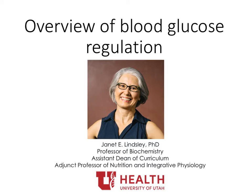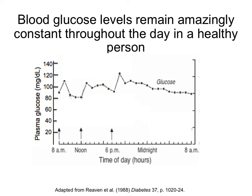Hello, welcome to this mini lecture on blood glucose regulation. The level of glucose in the blood of a healthy person remains surprisingly stable throughout the course of the day, as shown here in this graph, where for a healthy person, every hour their blood glucose was measured. You see a small rise after breakfast, lunch, and dinner, but then the level drops back down to the range of 80 to 100 mg per deciliter. In the remainder of this lecture, we'll talk about why it's important to maintain the appropriate blood glucose level and what types of mechanisms allow for this glucose homeostasis.